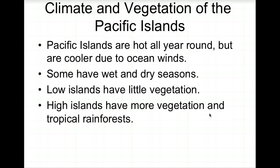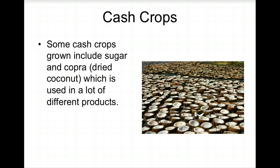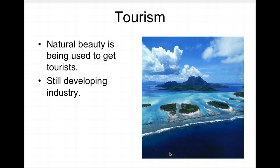Pacific Islands are hot all year round but not extremely hot because ocean winds moderate the temperature. Some islands have wet and dry seasons depending on wind direction. Low islands have little vegetation, while high islands have more, including tropical rainforest. There are few natural resources, but the coconut palm is probably the most important. Cash crops include sugar and copra — dried coconut used in soaps and other products.